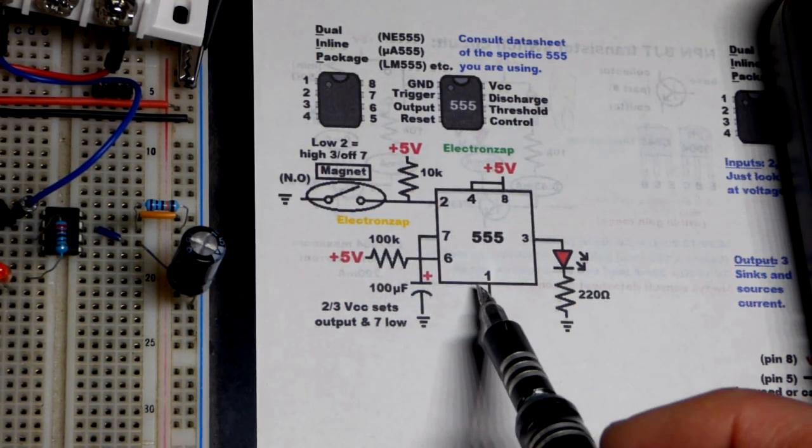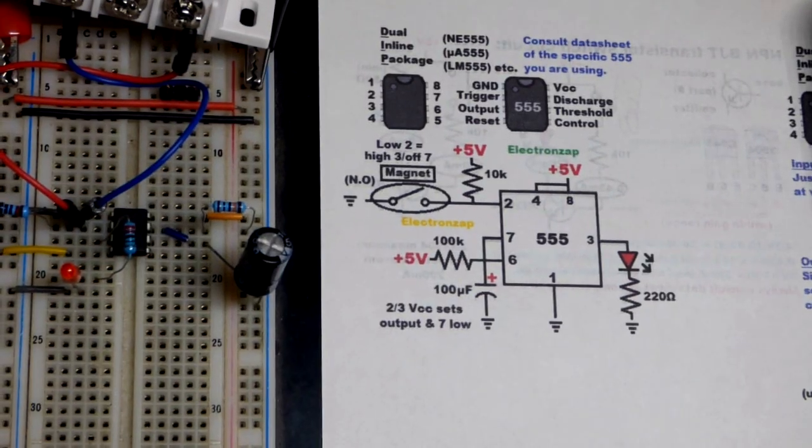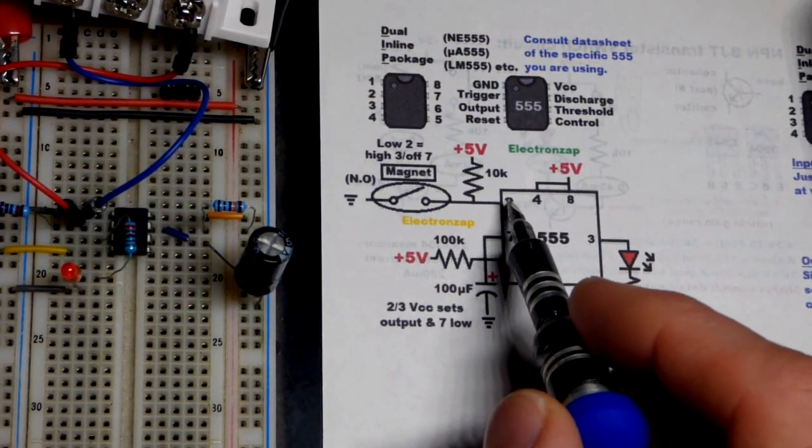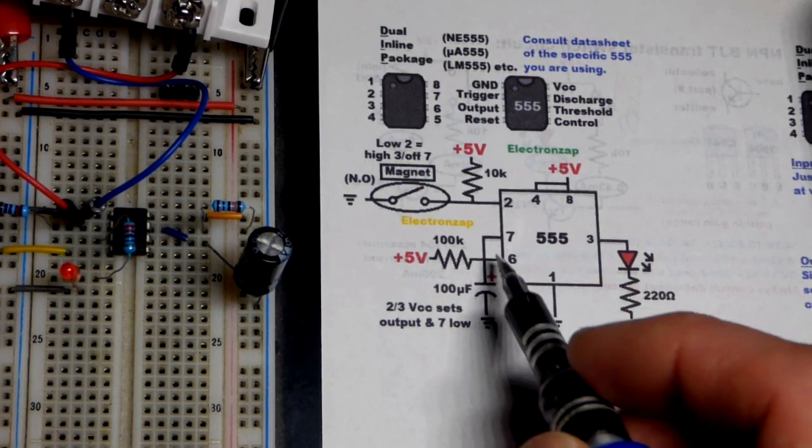That's based on the resistor and capacitor value. If we maintain a low input to pin 2, that's going to hold the output high until we stop. If it exceeds the timing, hopefully that makes sense.